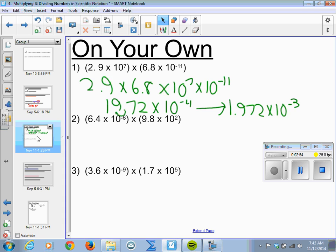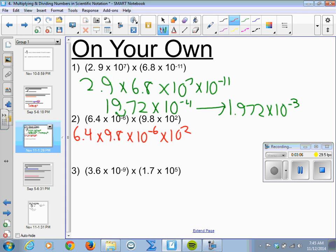Okay, same process down below. We write it as 6.4 times 9.8 times 10 to the negative 6th times 10 squared. So the calculator again, I do 6.4 times 9.8 to give me 62.72. And then add the exponents with the 10, 10 to the negative 4th.